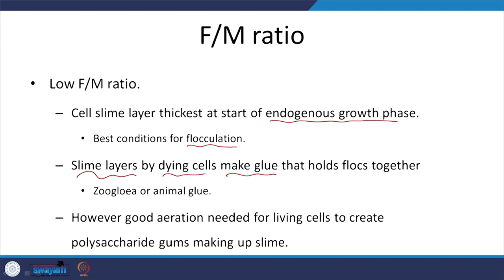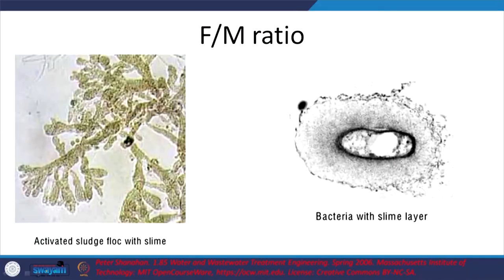Slime layers are formed when we have dying cells. To get this slime layer we need good aeration for the living cells to create the relevant polysaccharides that make up the slime. So to achieve conditions that lead to formation of this gluey or sticky layer, you need to aerate well. Here we have bacteria with the relevant slimy layer around them — activated sludge flocs with slime — which is what we get when we maintain F/M at the sweet spot.